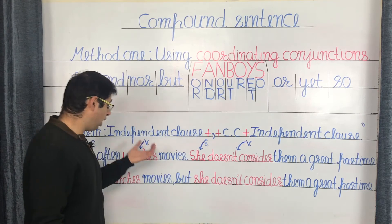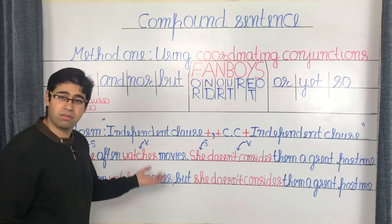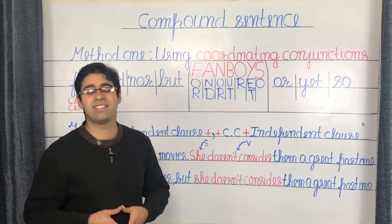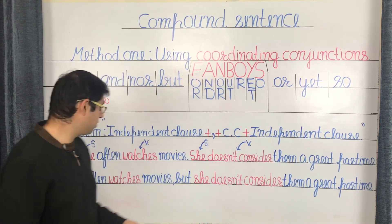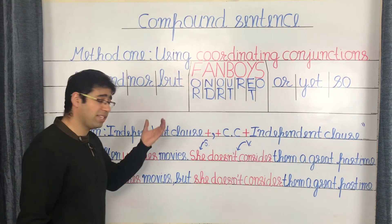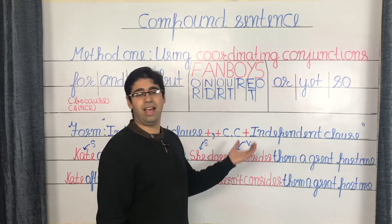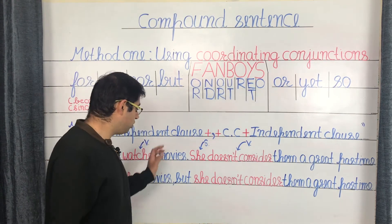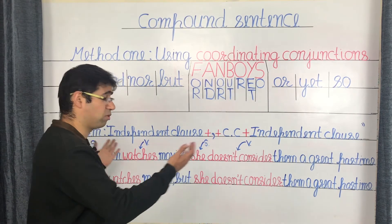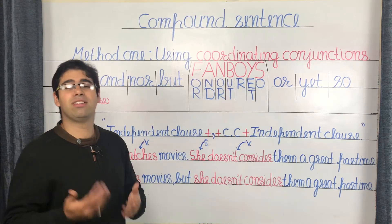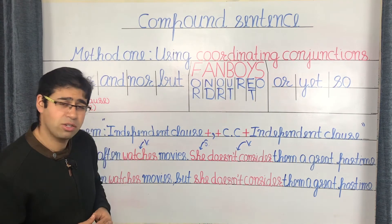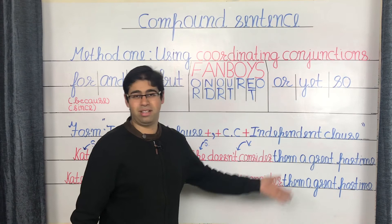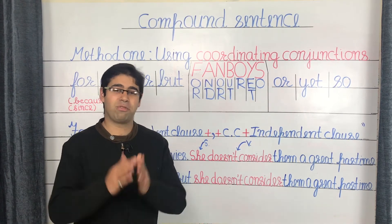Let's look at an example. We have two independent clauses: 'Kate often watches movies.' and 'She doesn't consider them a great pastime.' Both are independent clauses with their own subject and verb — Kate and watches in the first; she and doesn't consider in the second. There's a relation of contrast, but it's not evident due to the full stop. So we turn them into a compound sentence: 'Kate often watches movies, but she doesn't consider them a great pastime,' easily bringing out the contrast.